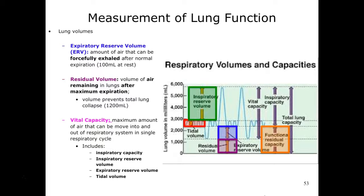If you contract your abdominal muscles and chest muscles to push all that air out, what's left is residual volume. We're glad this residual volume stays in our lungs because without it our lungs would collapse. Vital capacity is the maximum amount of air we can move into and out of our respiratory system in one single cycle — it's your inspiratory capacity, inspiratory reserve volume, and tidal volume all added together.